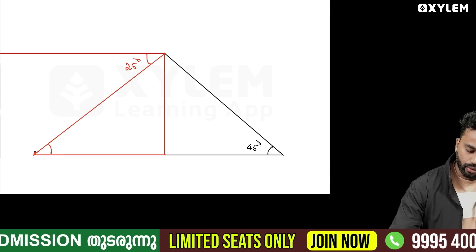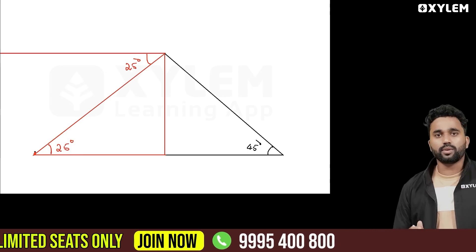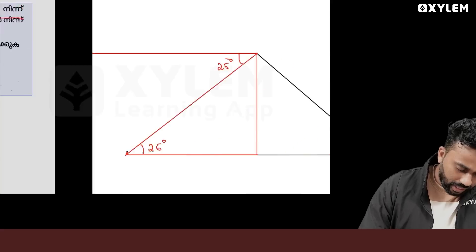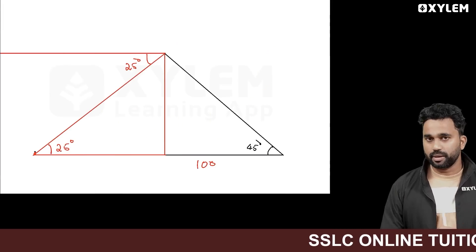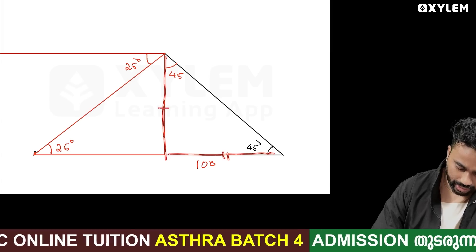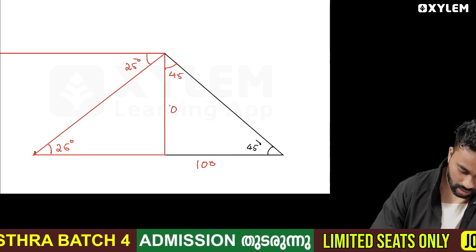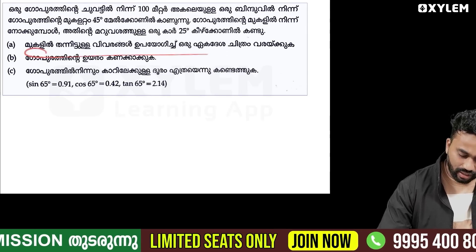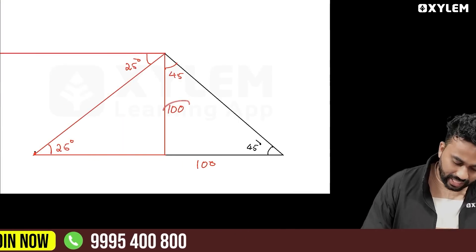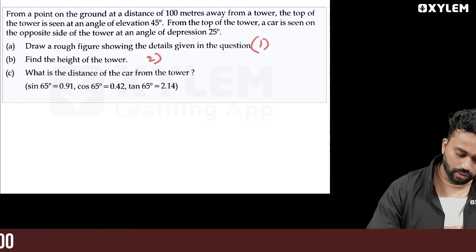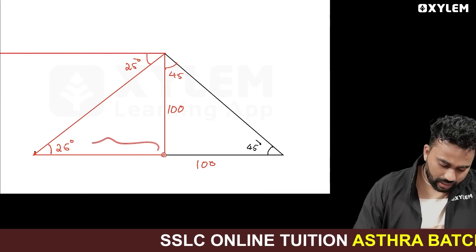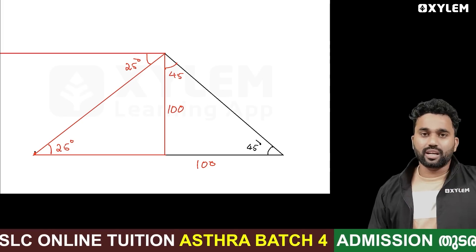This right triangle — this angle is 25 degrees. This triangle: the distance is 100 meters. It's a 45-50 isosceles triangle, the same thing, two sides are equal. So this is 100 meters. What is the height of the tower? The answer is easier to get — 100 meters. Now you have 3 marks. What is the distance of the car from the tower?